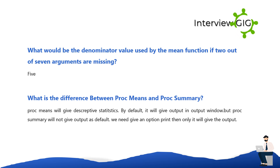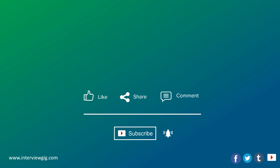What is the difference between PROC MEANS and PROC SUMMARY? PROC MEANS will give descriptive statistics by default and will produce output in an output window, but PROC SUMMARY will not give output by default — you need to give a PRINT option for it to give the output. Like, share, and comment. Don't forget to click the subscribe button and the bell button for latest updates.